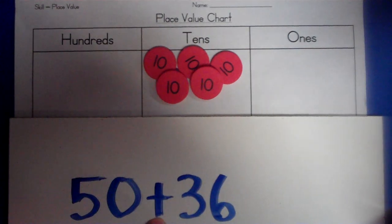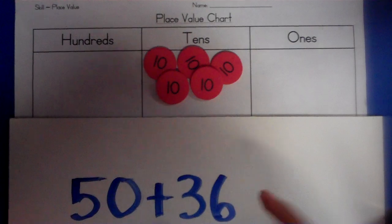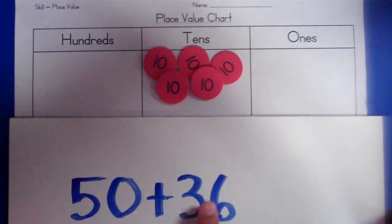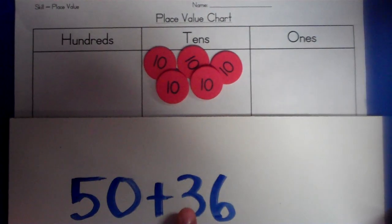Now I'm going to add to that. I'm adding 36 to it. Add means to put this number together with this number. So I'm going to add 3 tens, put it together, and 6 ones.